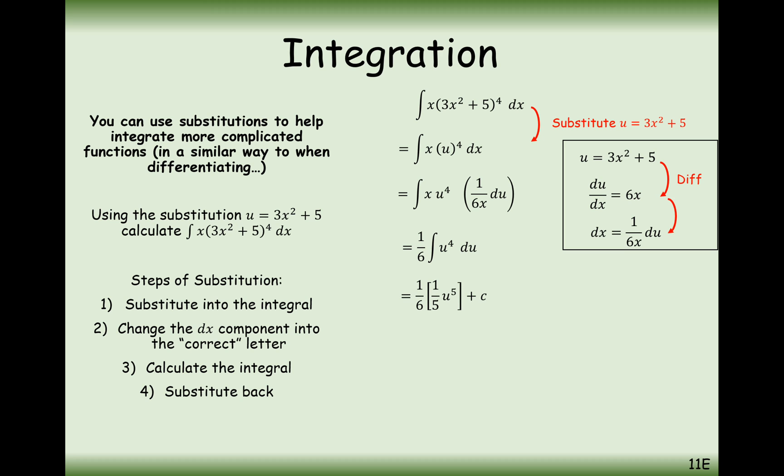Integrate that, increase the power by 1, divide by the new power. That's the 30th u to the power of 5 plus c. And substitute your substitution back in. It's going to be 1 30th bracket 3x squared plus 5 all to the power of 5 plus c. There we go, that's not too bad then.